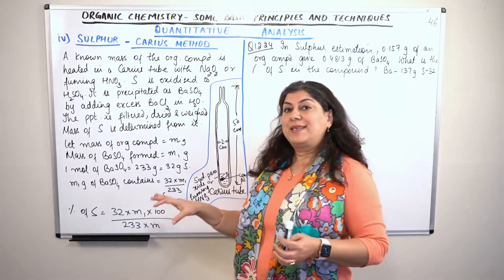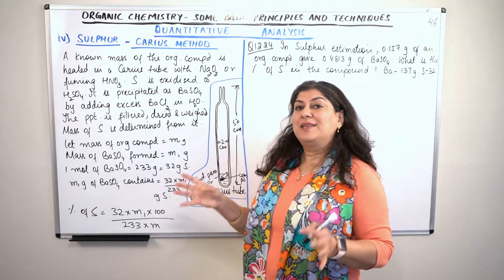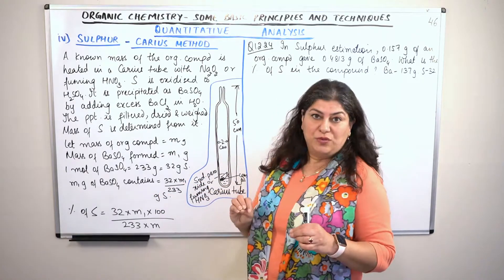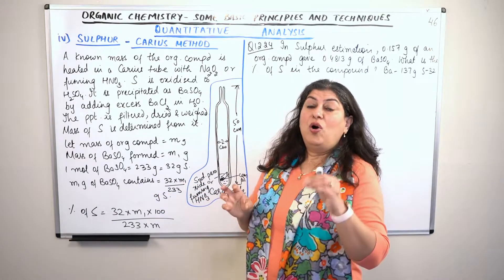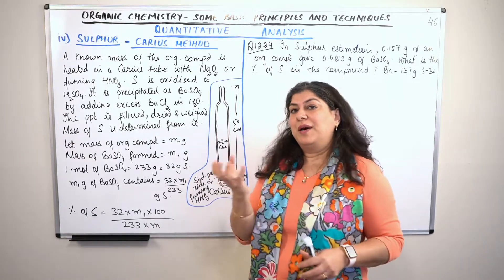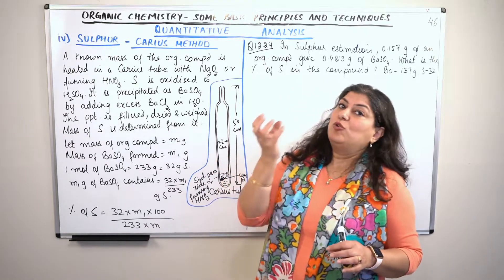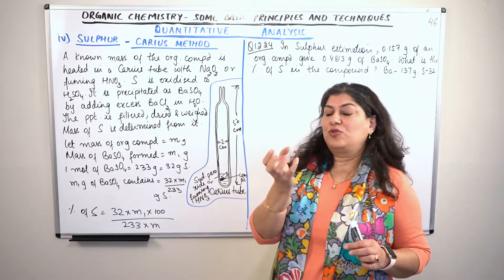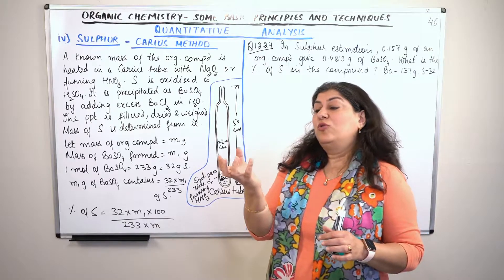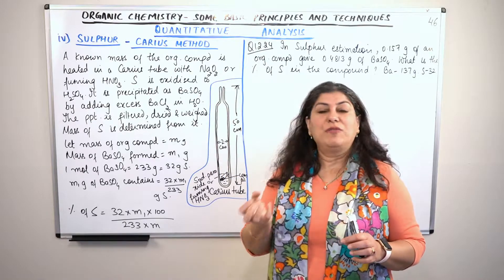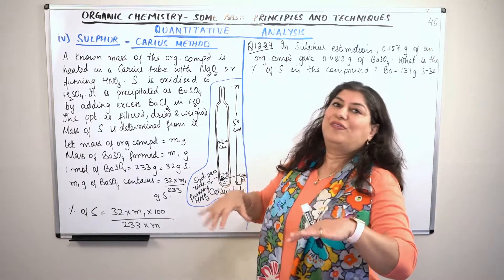In this case, we will convert sulfur into a precipitate. Then we will calculate the molar mass from the precipitate, and after that we will calculate the mass percentage.